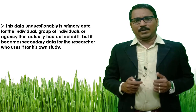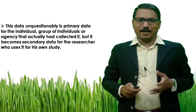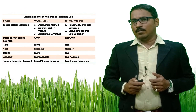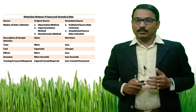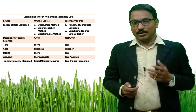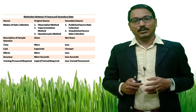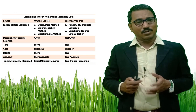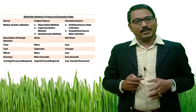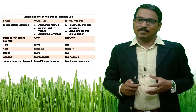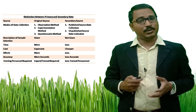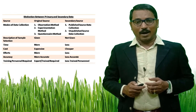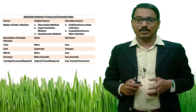Now let us look at the distinction between primary and secondary data, shown here in a tabular format with three columns: source, original source, and secondary source. On the basis of modes of collection, primary data is generally collected through observation method, experimentation method, or questionnaire method. Secondary sources of data collection are published or unpublished sources of data.